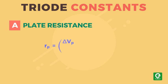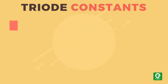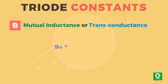Mutual inductance or trans-conductance is defined as the ratio between change in plate current to the change in grid potential, keeping plate potential constant, required to bring about that change in current.